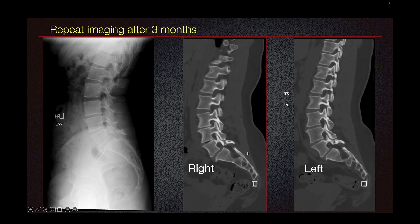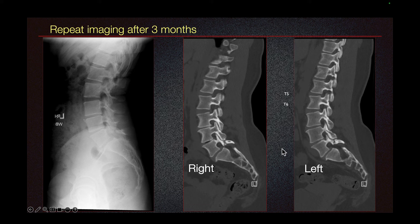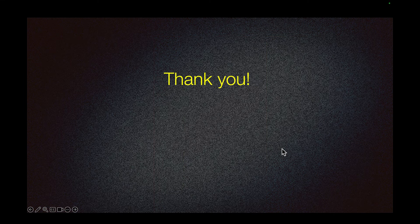The patient had persistent pain and we obtained repeat imaging after three months. On the radiograph, we can see the pars fracture and also the anterior listhesis. On the CT, on both the right and left, we can see the pars fracture. Thank you for watching the video.